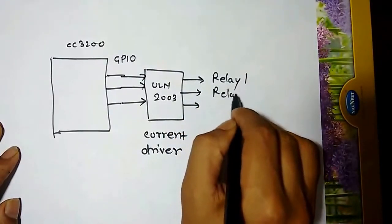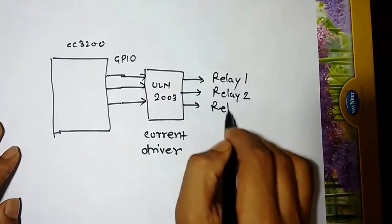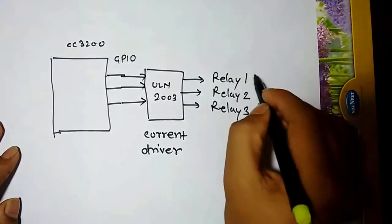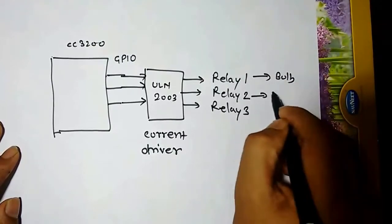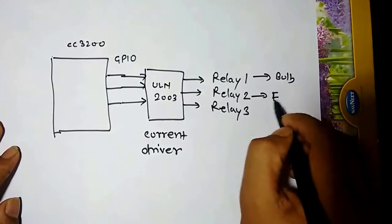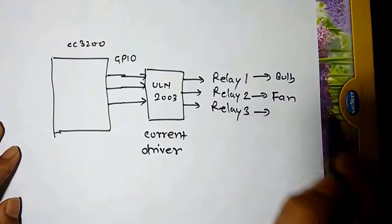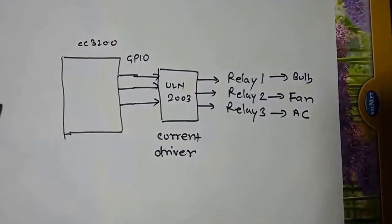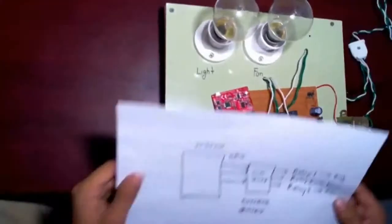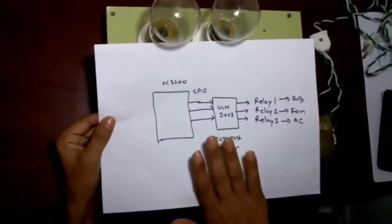Relay 1, relay 2, and relay 3. Now these relays can be connected through your bulb, fan, and AC. So now everything has been done here. This is the final thing.